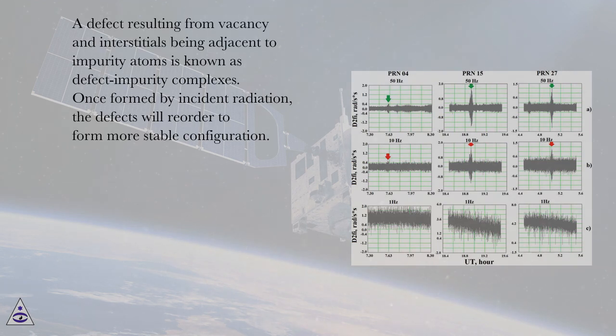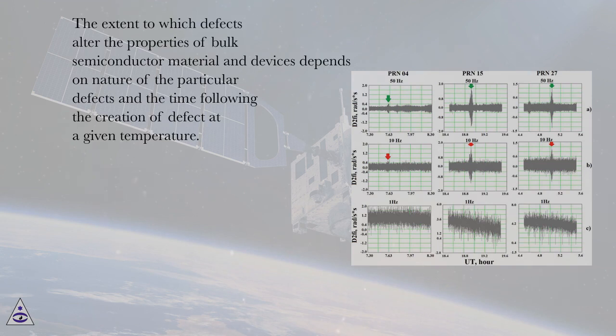Once formed by incident radiation, the defects will reorder to form more stable configuration. The extent to which defects alter the properties of bulk semiconductor material and devices depends on nature of the particular defects and the time following the creation of defect at a given temperature.